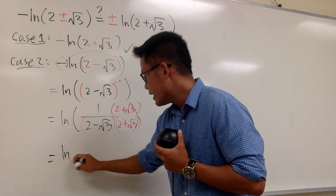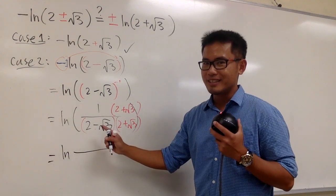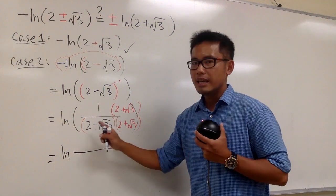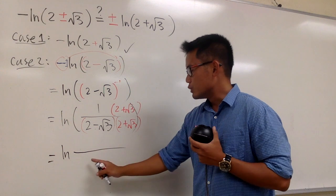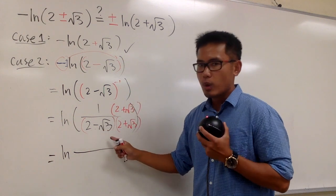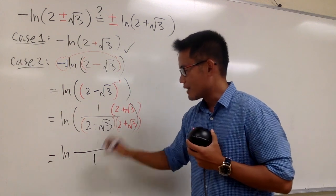Anyway, this is ln on the bottom. Let's do this in your head, I know you can handle it. 2 minus square root of 3 times 2 plus square root of 3. This is a minus b times a plus b. So the result is going to be a squared, which is 2 squared, which is 4, minus square root of 3 squared, which is 3. 4 minus 3 is just 1.